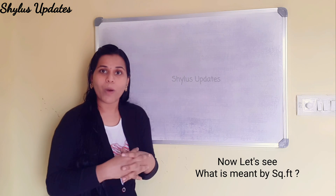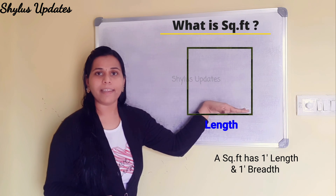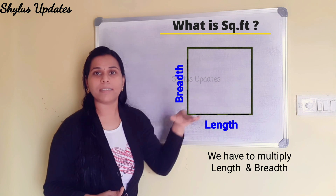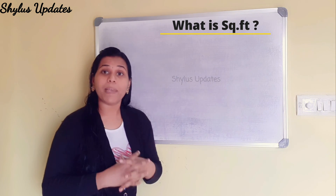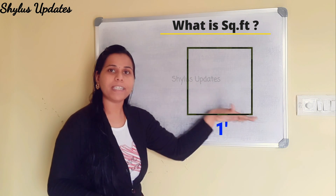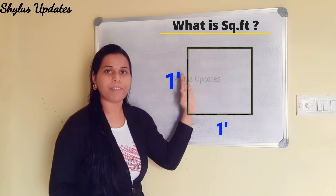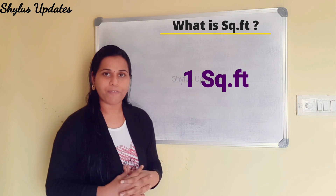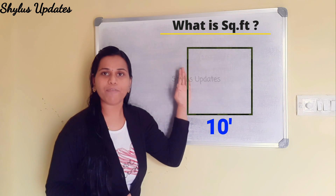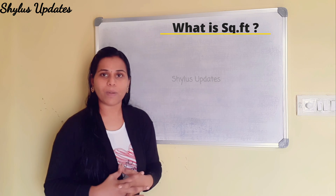Now let's see what is meant by square feet. A square foot has 1 foot length and 1 foot breadth. We have to multiply both length and breadth. The basic area formula is length into breadth. Which means if you have 1 foot length and 1 foot breadth, we multiply 1 foot into 1 foot and we get 1 square foot. Similarly, if we multiply 10 feet length into 10 feet breadth, we will get 100 square feet. In this way, you have to calculate area.